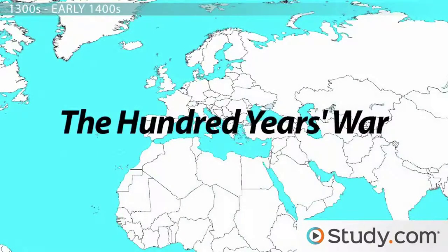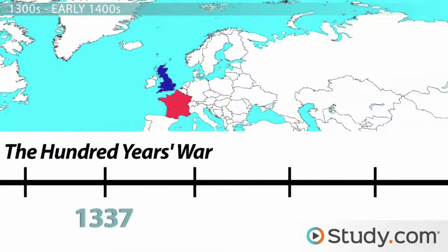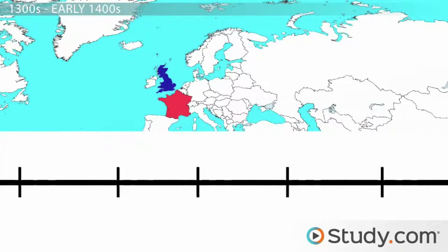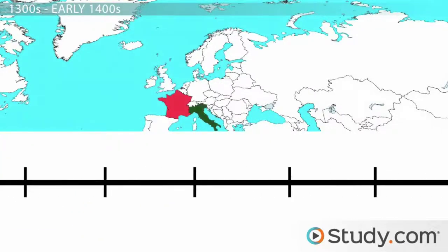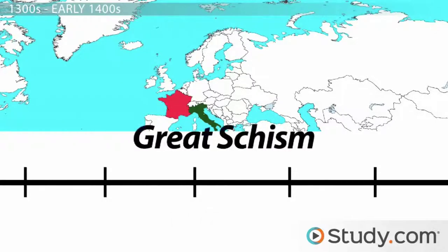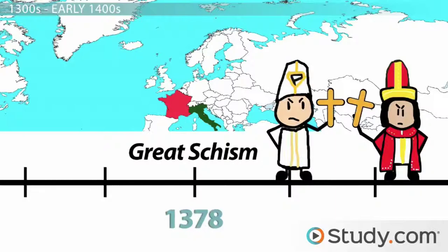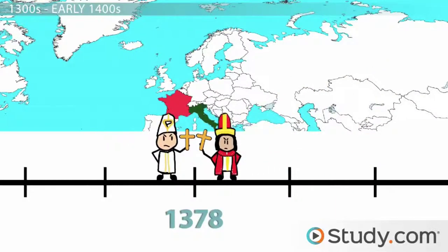First, we have the Hundred Years' War, beginning in 1337 and lasting for about 116 years. It was a nasty skirmish begun when the King of England tried to claim the Crown of France. Next, we have another struggle for power, but this time in the Papacy. It was known as the Great Schism of 1378, when two Popes both claimed authority over the Catholic Church — which caused a bit of a problem.